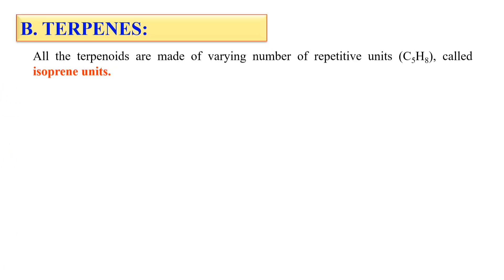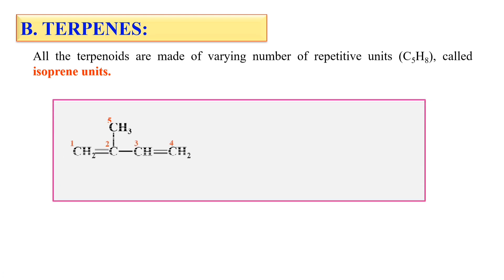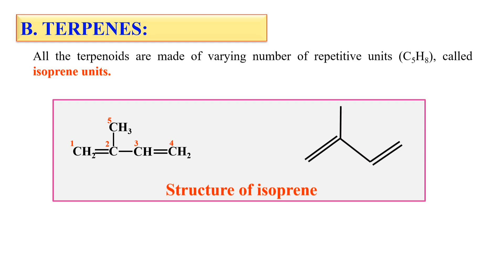Next are the terpenes. The terpenes are formed of the repeated unit of a molecule which is known as isoprene. The molecular formula of isoprene is C5H8, meaning it is a 5-carbon membered structure. This is the structure of isoprene, and this is the cyclic structure of the same molecule, isoprene.